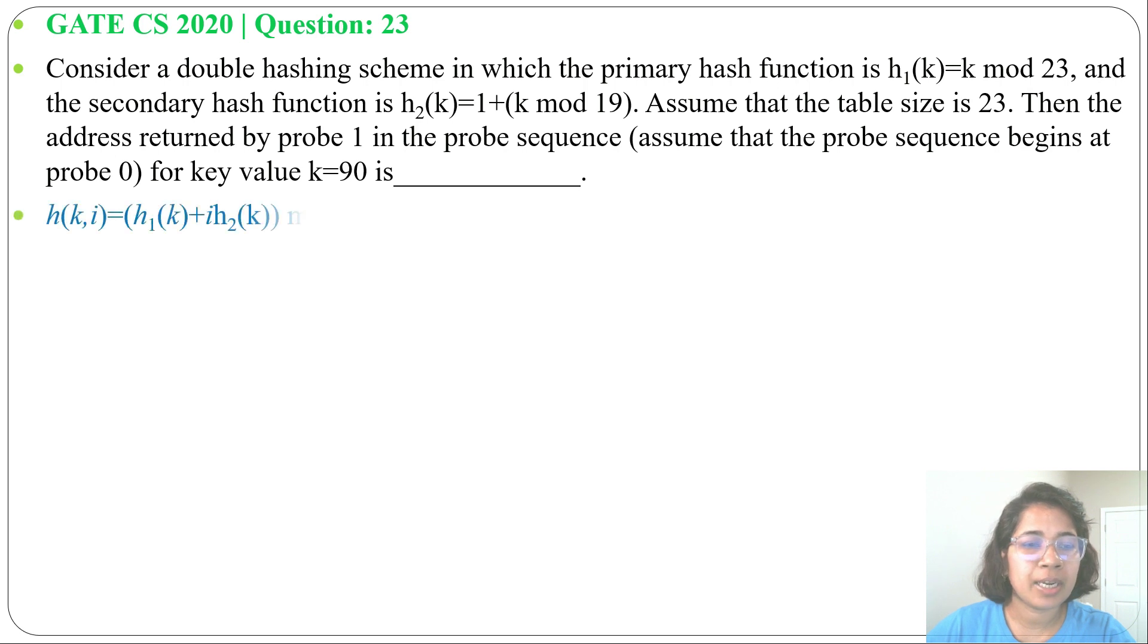The hash function for double hashing is h(k,i) = (h1(k) + i*h2(k)) mod m. Here h1(k) = k mod 23 and k value given is 90.